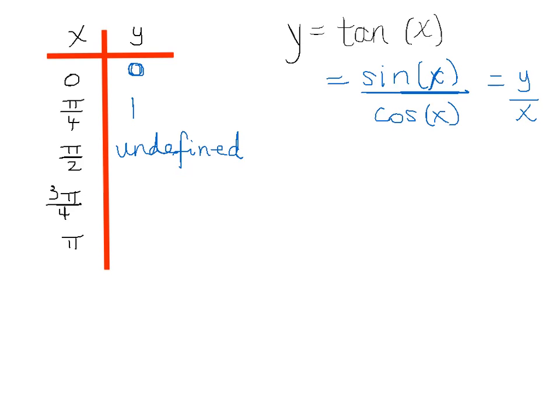At 3 pi over 4, we're now in the second quadrant where we have coordinates negative root 2 over 2, comma root 2 over 2. So tangent is negative 1. At pi, the coordinates are negative 1, 0, y over x. So tangent is 0.